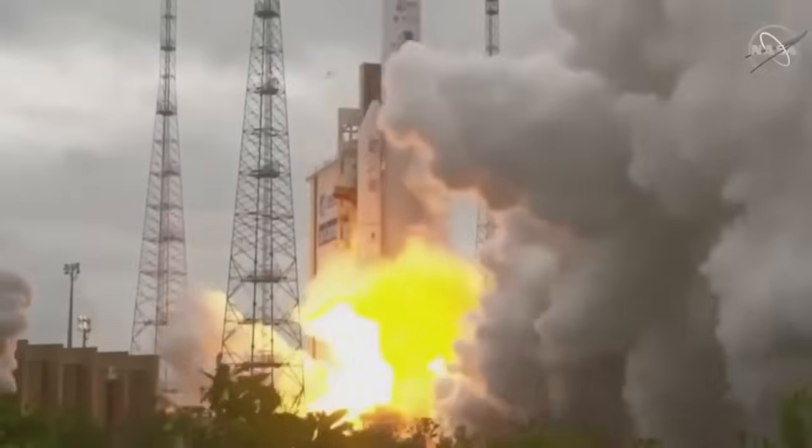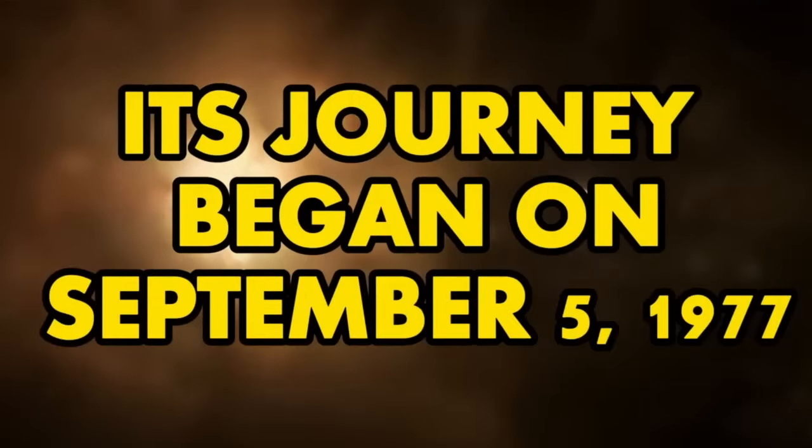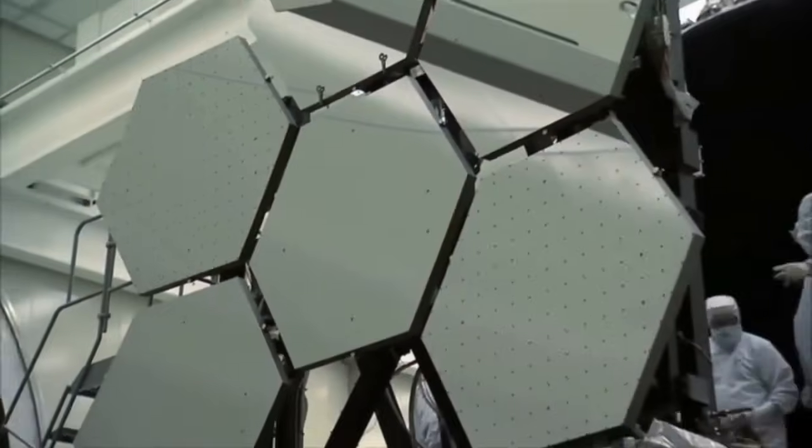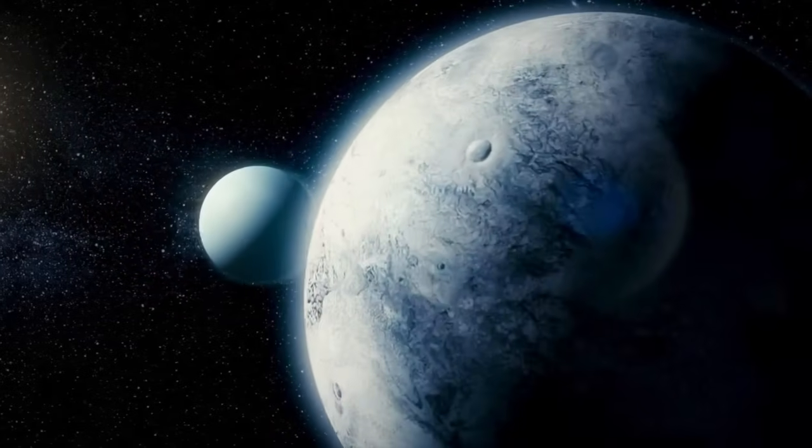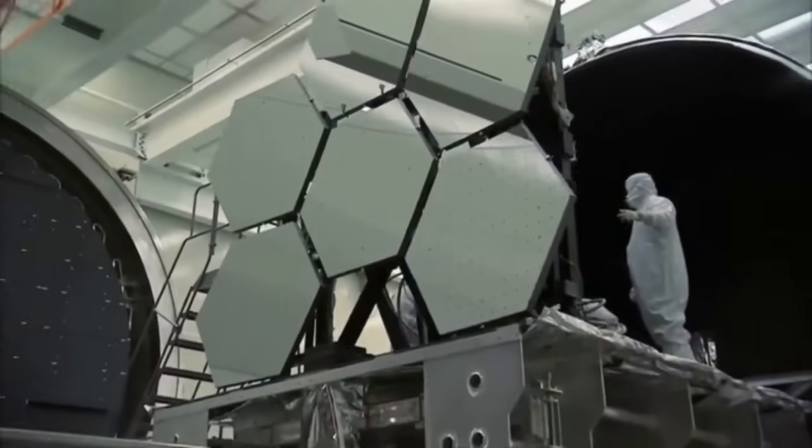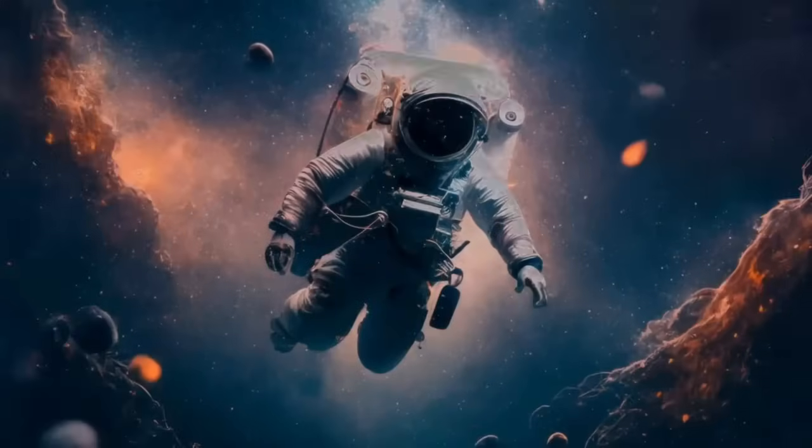Voyager 1 holds the record for being the farthest human-made object ever launched from Earth. Its journey began on September 5, 1977, as an integral part of the ambitious Voyager program, focused on the exploration of the outer planets of our solar system. Equipped with advanced scientific instruments and cameras, Voyager 1, in tandem with its twin Voyager 2, captured extraordinary images and data from the vast expanse of space.